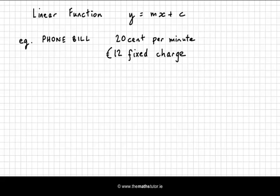First of all we're going to look at a linear function. A linear function takes the form y equals mx plus c, where x is the variable. The power of x is 1, it can be multiplied by a value m which is usually the slope or the rate, and c is some constant. An example of this is a phone bill where the rate is 20 cents per minute and the fixed charge is 12 euros.